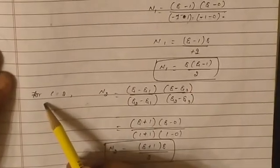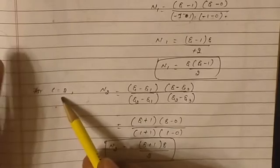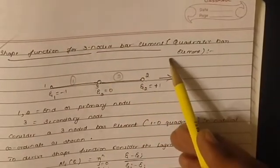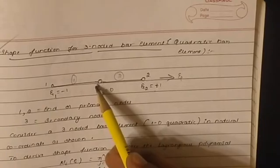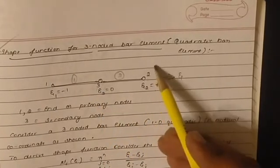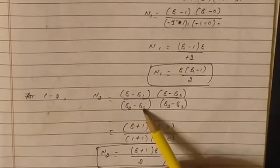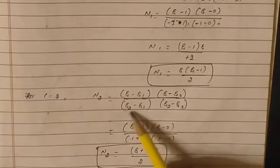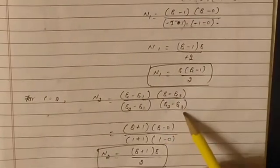Similarly, for i equals 2, we derive N2. When writing for the second node, skip the second node's term and write the formula for the remaining nodes. So N2 equals (zeta minus zeta_1)(zeta minus zeta_3) divided by (zeta_2 minus zeta_1)(zeta_2 minus zeta_3). We do not include zeta minus zeta_2, because that would make j equal to i.